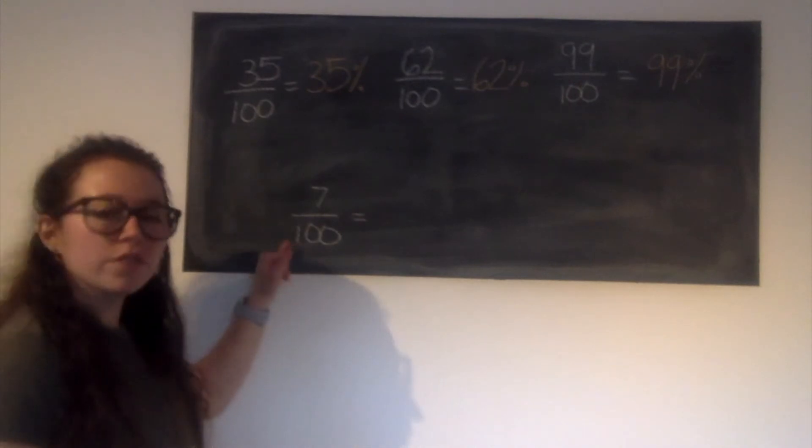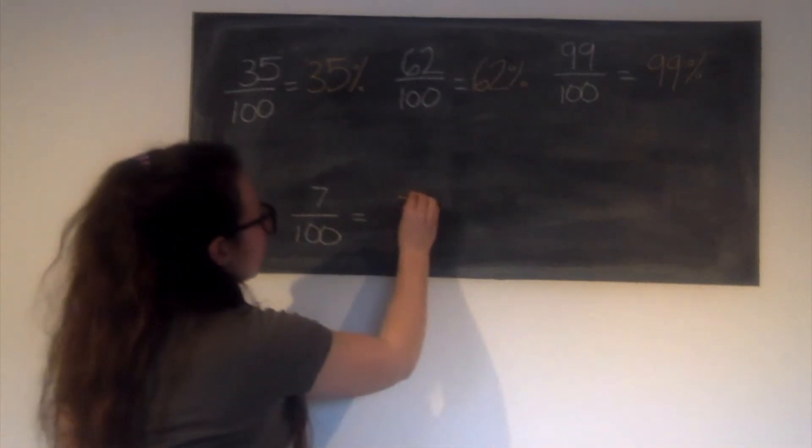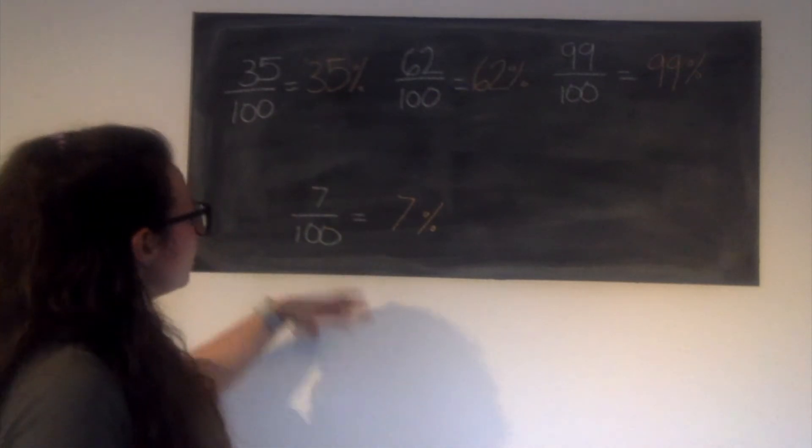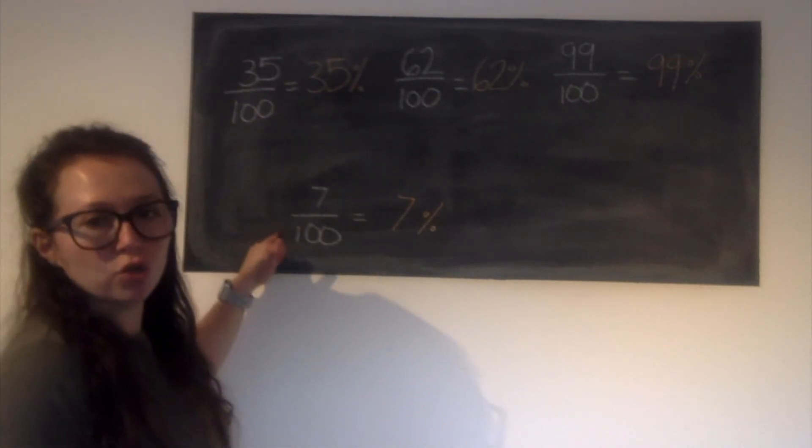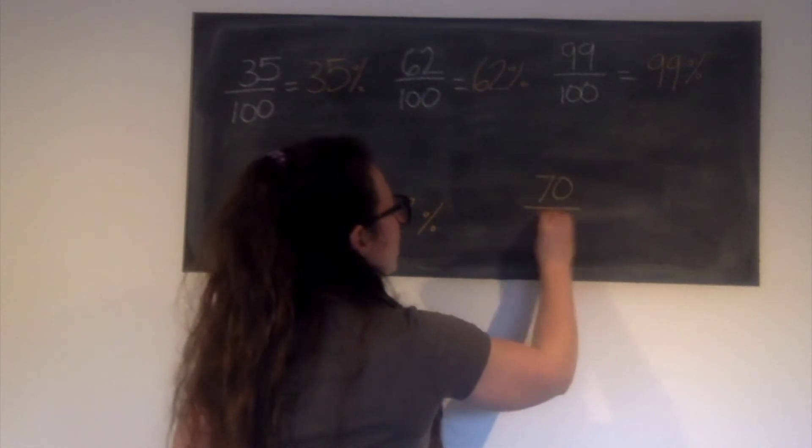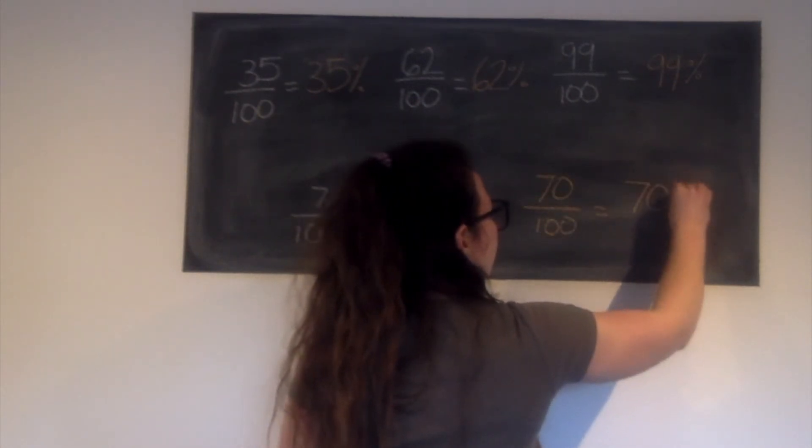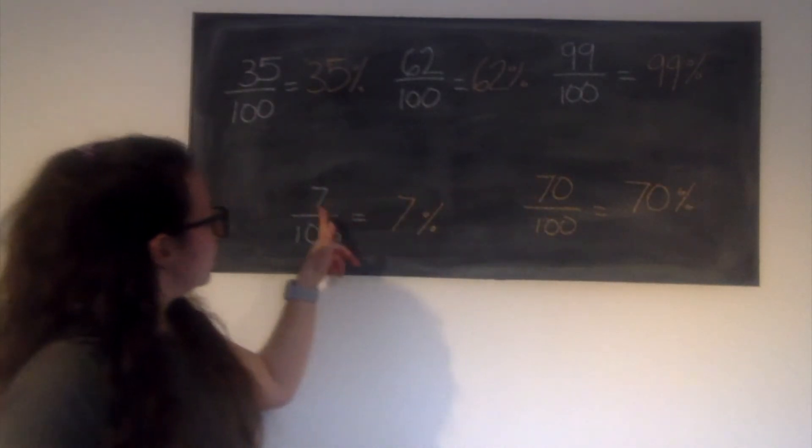And then 7 hundredths. Be careful with this one. It is 7% and not 70%. 70% would be 70 hundredths. Okay, so let's see that written down. 70 hundredths is equal to 70%.